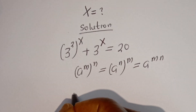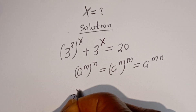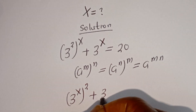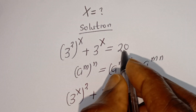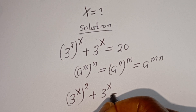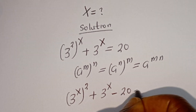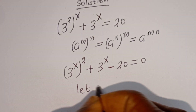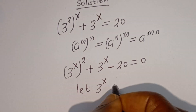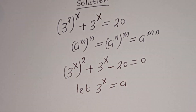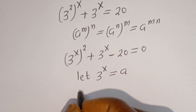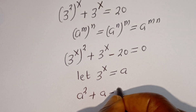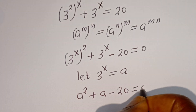Then this can be written as 3 to the power of x all squared, plus 3 to the power of x, minus 20 is equal to 0. Let 3 to the power of x equal to a. So this equation can be written as a squared plus a minus 20 is equal to 0.